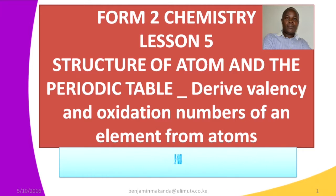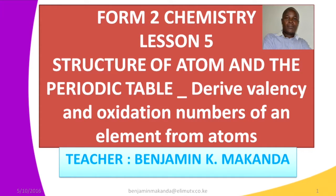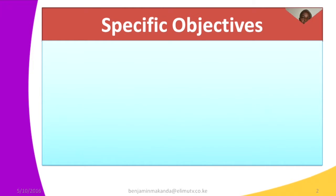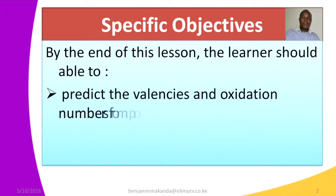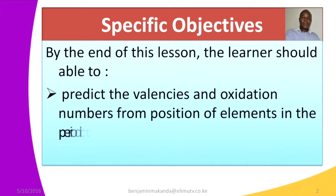We want to begin our lesson by looking at the lesson objectives. You can make your comments by calling our number, or use our Facebook page ElimTV, or follow us on Twitter at ElimTV_KE. The specific objective of the lesson: by the end of the lesson the learner should be able to predict the valences and oxidation numbers from the position of elements in the periodic table.